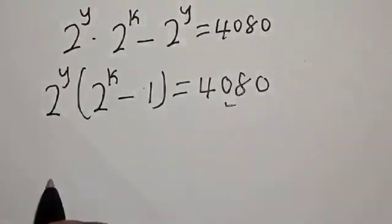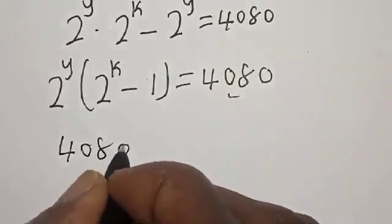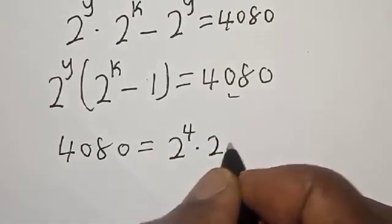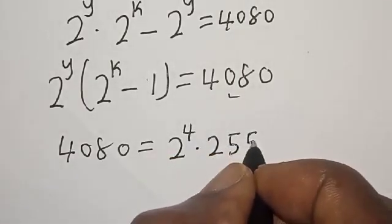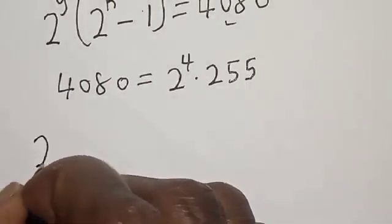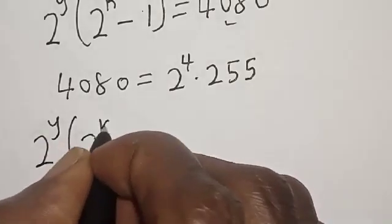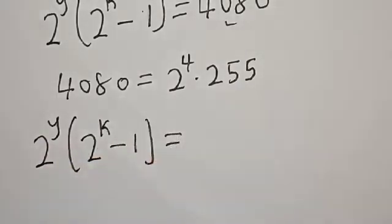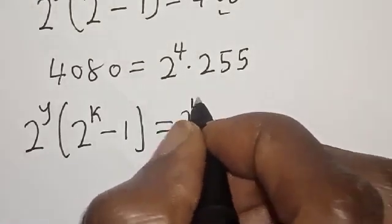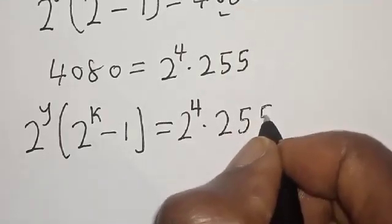Now let's work with this 4080. 4080 can be written as 2 raised to power 4 multiplied by 255. So 2 raised to power y times (2 raised to power k minus 1) is equal to 2 raised to power 4 multiplied by 255.